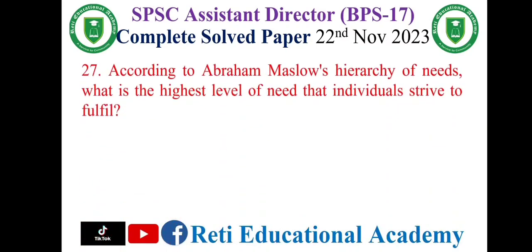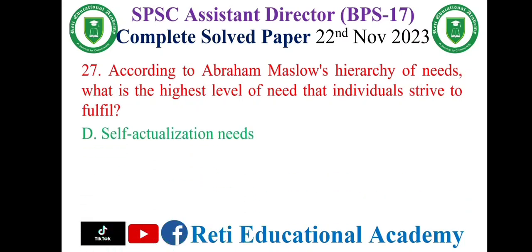Question number 27: According to Abraham Maslow's hierarchy of needs, what is the highest level of need that individuals strive to fulfill? The correct option is D — Self-actualization needs.